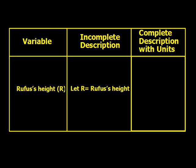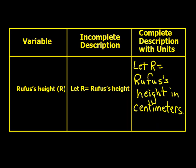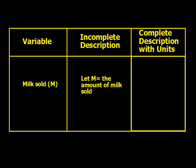On to our second one: we have Rufus's height, R. Rather than 'let R equal Rufus's height,' we specify: let R equal Rufus's height in centimeters — or you could have chosen inches, feet, etc. At this point, go ahead and pause the video, solve the next few on your own, and when you're ready, come back and we'll see how you did.